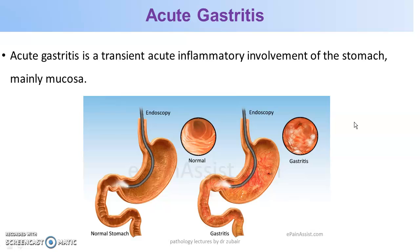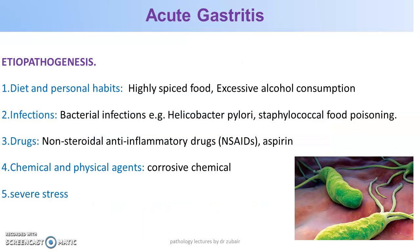Gastritis means inflammation of the stomach — 'itis' refers to inflammation. Gastritis is an inflammatory condition of the stomach, and any inflammatory condition can be acute or chronic. Acute gastritis is a transient acute inflammatory involvement of the stomach, mainly the mucosa.